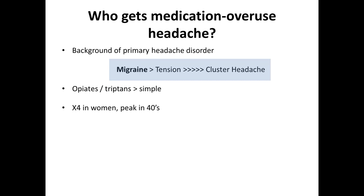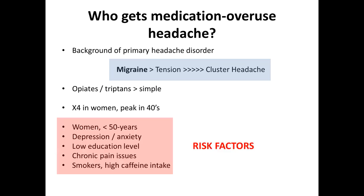Medication overuse headache appears to be four times more common in middle-aged women, which mirrors the number of middle-aged women who have chronic migraine. Certain risk factors include: women under the age of 50, a background of depression or anxiety, lower education level, chronic pain conditions such as fibromyalgia or chronic abdominal pain, smoking, and high caffeine intake.